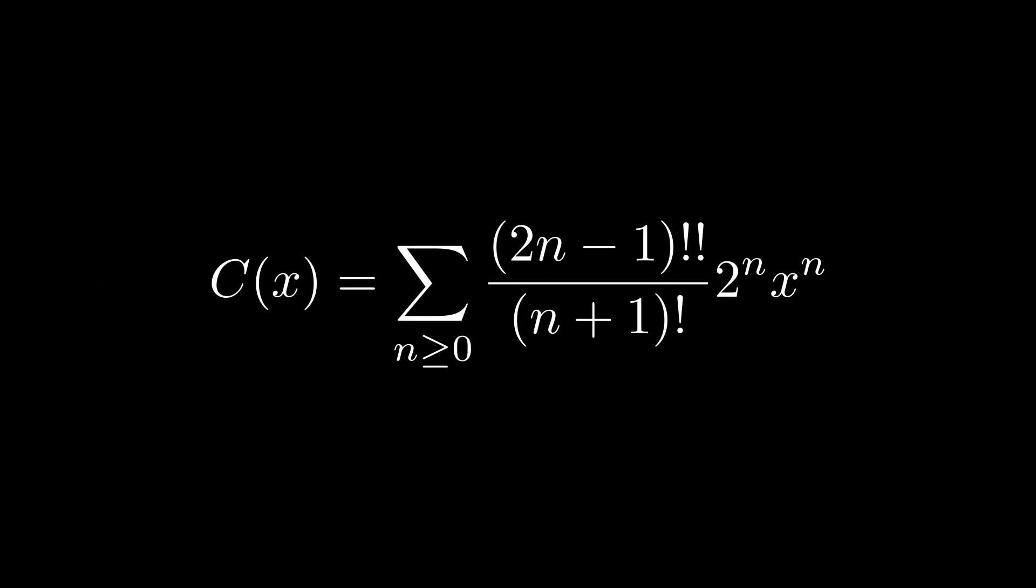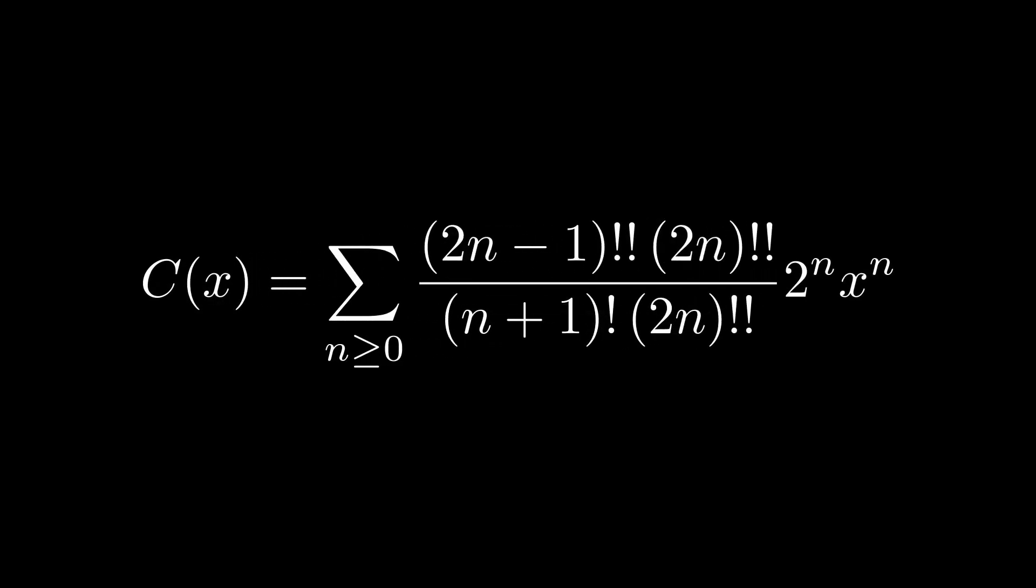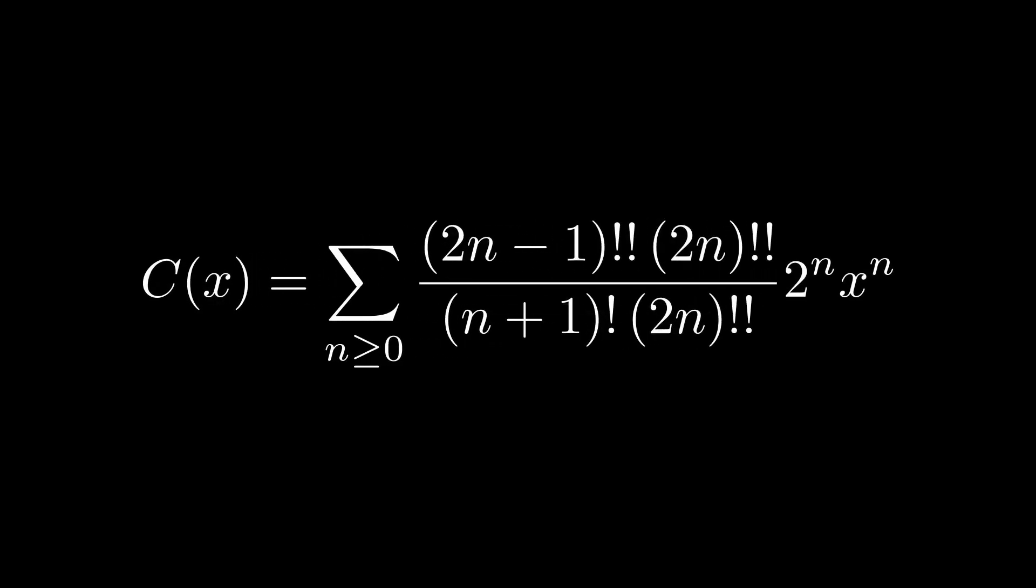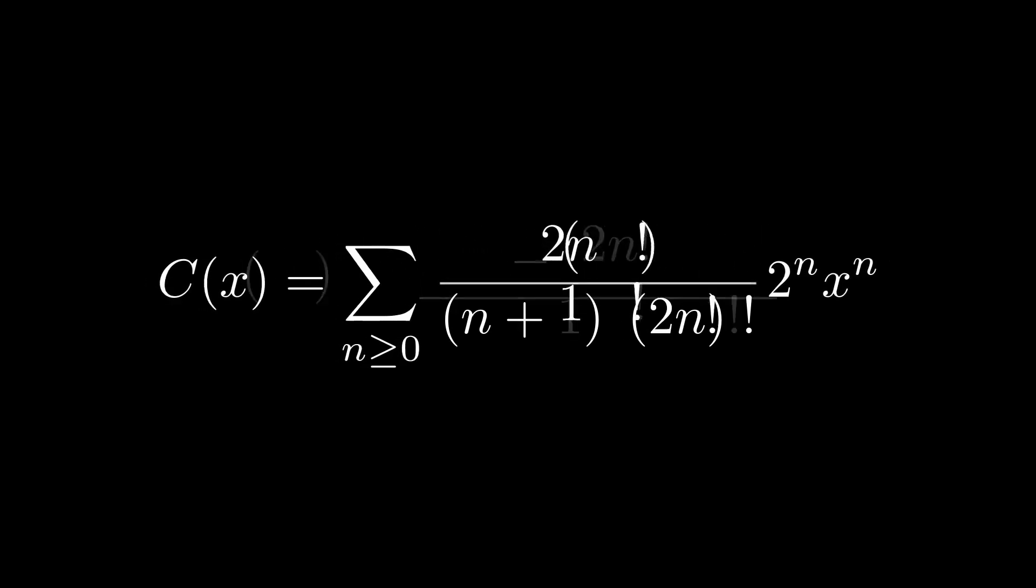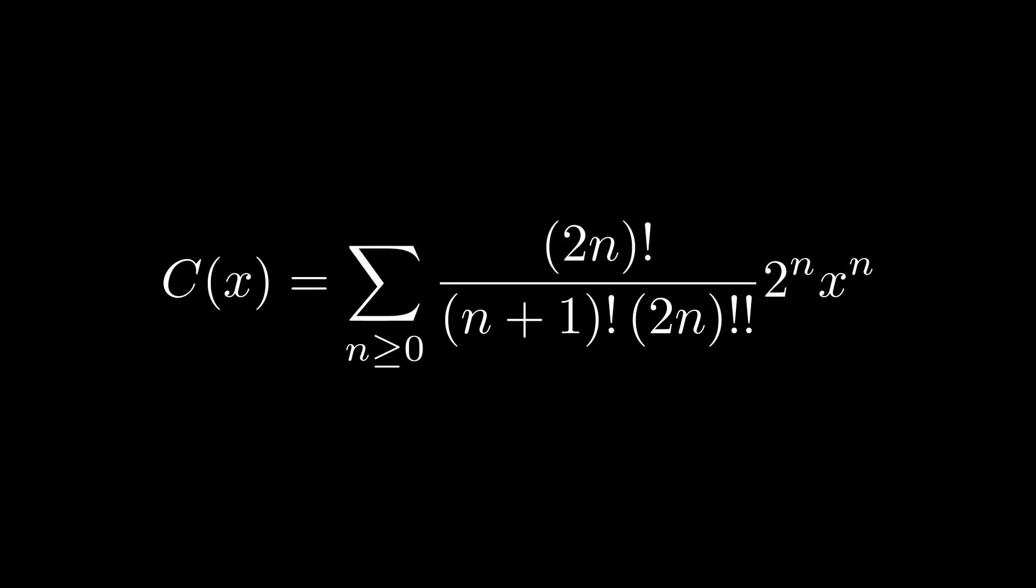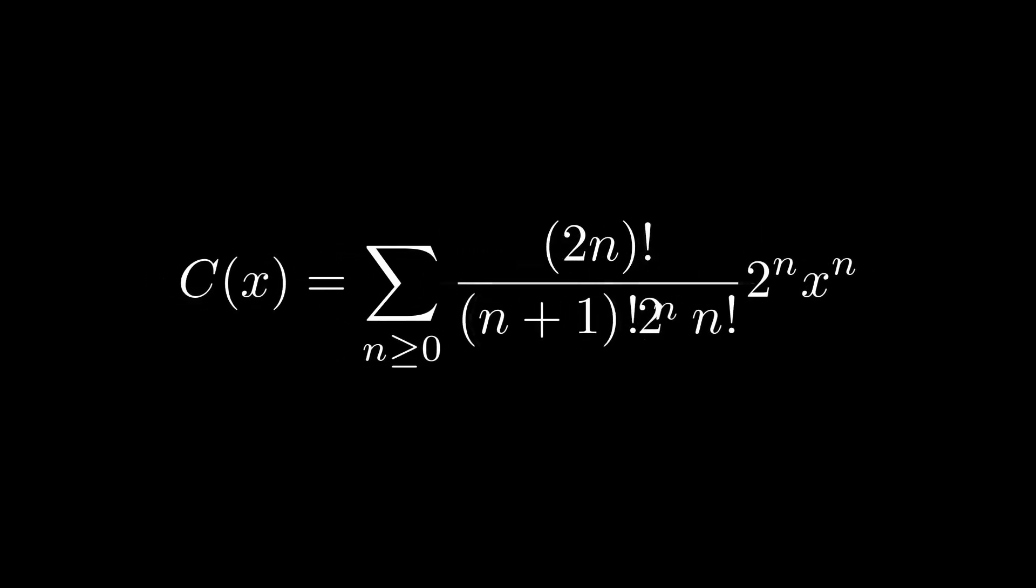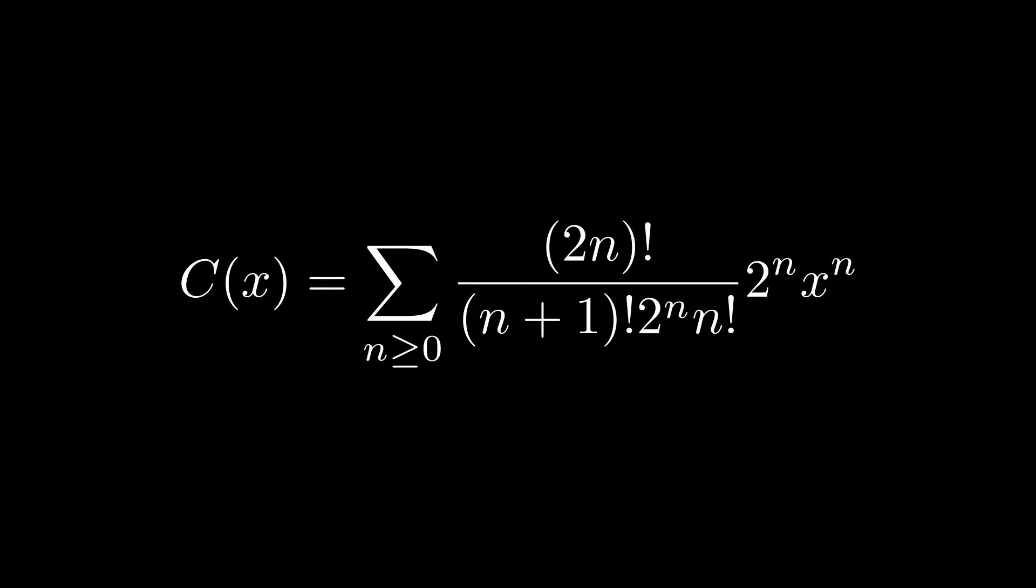We want a term of 2n quantity factorial to appear. And to get this, we're gonna multiply and divide by 2n double factorial. Now, on the denominator, you can remark that 2n quantity double factorial can be re-expressed as 2 to the n times n factorial. And so this gives us the following.